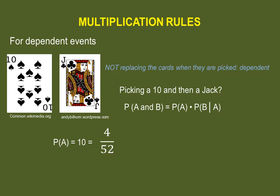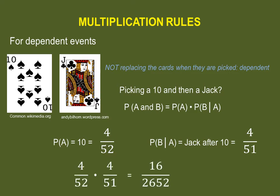Since you do not put that card back into your deck, you now have only fifty-one cards. So event B, after A has occurred, gives you four chances out of fifty-one of picking a jack. Multiply these two probabilities together: four out of fifty-two times four out of fifty-one equals sixteen out of two thousand six hundred and fifty-two. Simplified, that comes down to four out of six hundred and sixty-three.